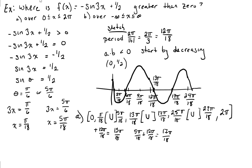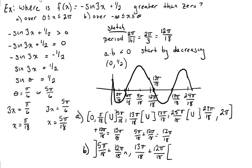What happens if our domain is from negative infinity to positive infinity? We take our first solution set and add our period times n. So we have 5π/18 plus 12π/18 · n — remember when we were writing solutions like plus 2π·n, that was because one full cycle was 2π. Well, now one full cycle is 12π/18. So the general solution is from π/18 + 12π/18·n to 13π/18 + 12π/18·n. There's the general solution and there's our specific solution. Hopefully that helps, and I will see you tomorrow.